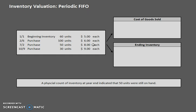So let's start taking a look at the data we have available. We have a series of beginning inventory and purchases throughout the period. At the beginning of the year they had 60 units at five dollars each, they made a purchase of 100 units at six dollars each, 50 units at eight dollars, 30 units at nine dollars, and so on. As you can see, this is a period of rising prices.